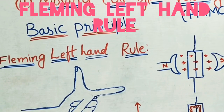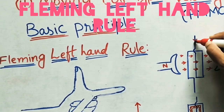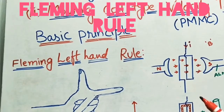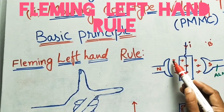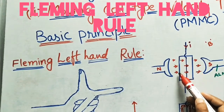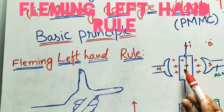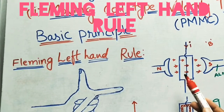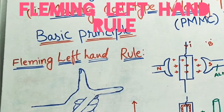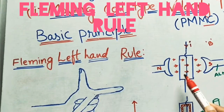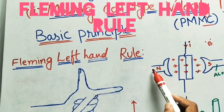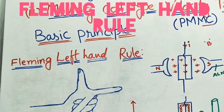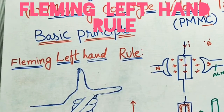Now we have to supply current into this coil. Whenever current is passing through the coil in the magnetic field, a magnetic force develops on the coil and it will try to rotate the coil. This is the main basic principle of the permanent magnet moving coil type — the coil is the moving part, and we supply electricity through it while the two magnets, N and S, are fixed.